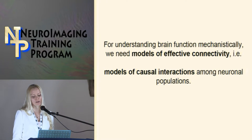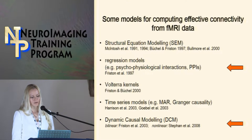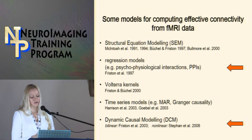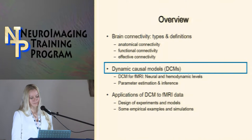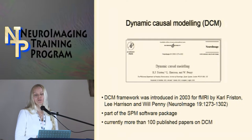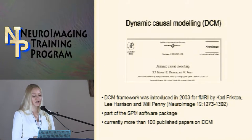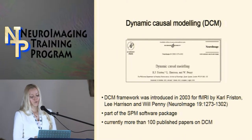For understanding brain function mechanistically, we need effective connectivity — models of causal interactions among neuronal populations. Some models for computing fMRI effective connectivity include structural equation modeling, regression models, Volterra kernels, time series models, and dynamic causal modeling. Dynamic causal modeling was introduced in 2003 for fMRI by Karl Friston, Lee Harrison, and Will Penny, as part of the SPM software package. There are now more than 100 published papers on DCM.